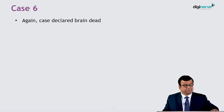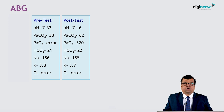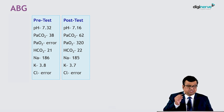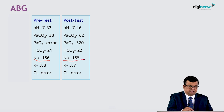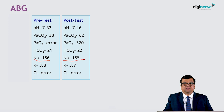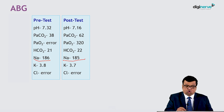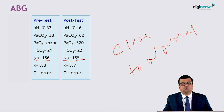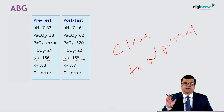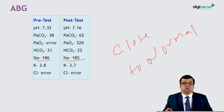Here is another ABG for your perusal from a declared brain-dead patient. Every other thing is fine except sodium of 186 in the pre-test and 185 in the post-test. Remember, one of the preconditions is to have physiology close to normal. If physiology is not close to normal, you should not even be starting the test. Hypernatremia is a very common complication in patients who are brain stem dead.